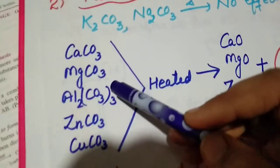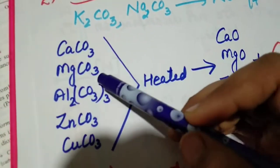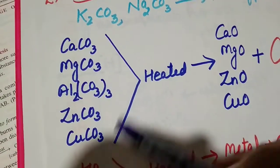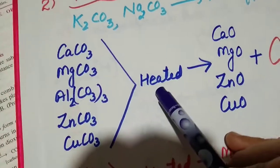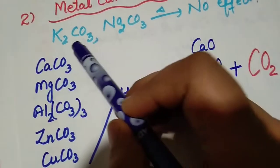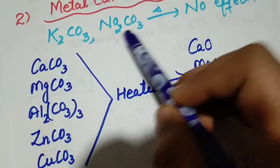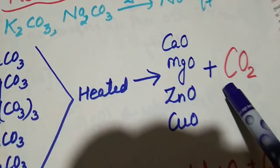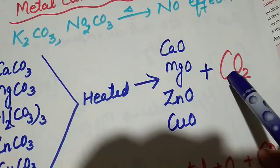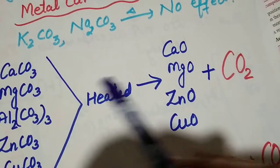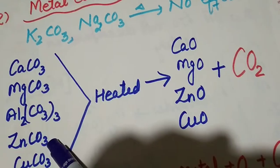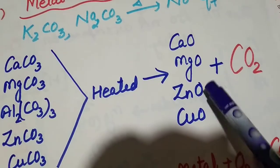Next category we have calcium carbonate, magnesium carbonate, aluminium carbonate, zinc carbonate, copper carbonate. When their carbonates are heated, they give corresponding oxides. Since carbonates have CO3, it will give you carbon dioxide gas. Calcium carbonate will produce calcium oxide plus CO2, magnesium carbonate will give magnesium oxide and CO2.